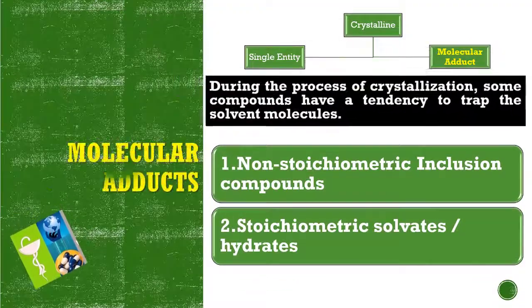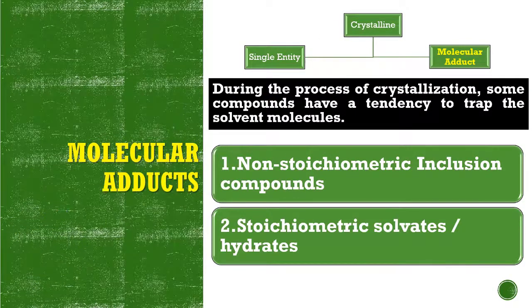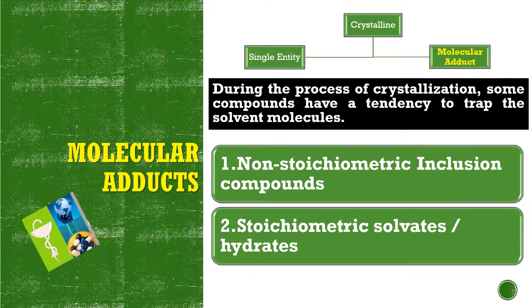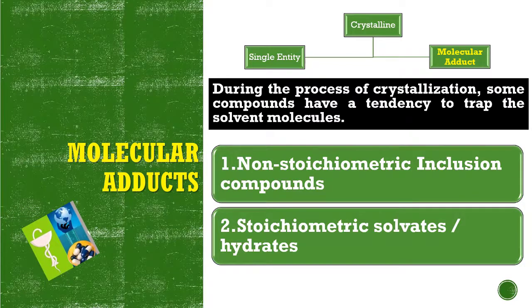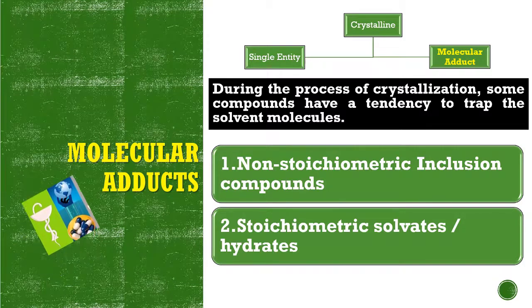The second one is Molecular adducts. During the process of crystallization, some compounds have a tendency to trap the solvent molecules. Molecular adducts can be classified into: 1. Non-stoichiometric inclusion compounds, and 2. Stoichiometric solvates or hydrates.